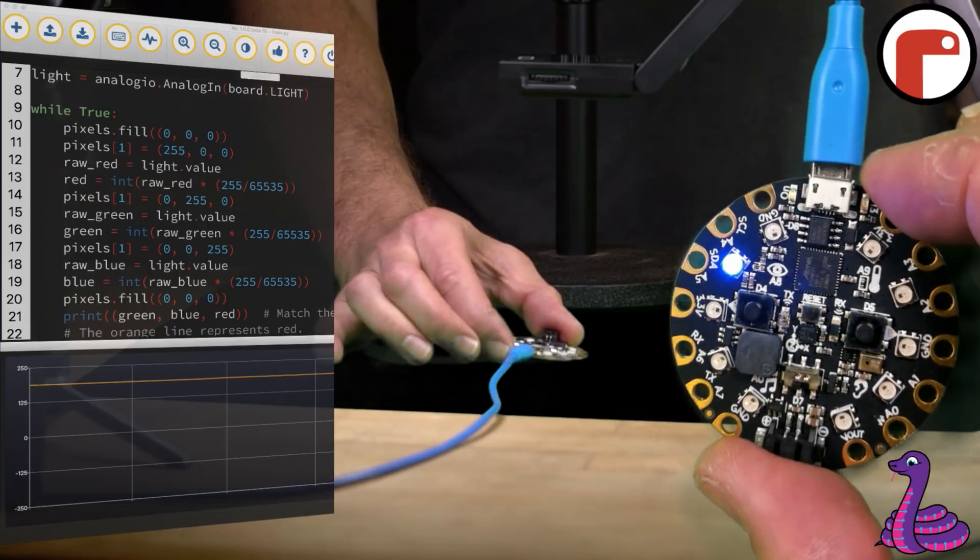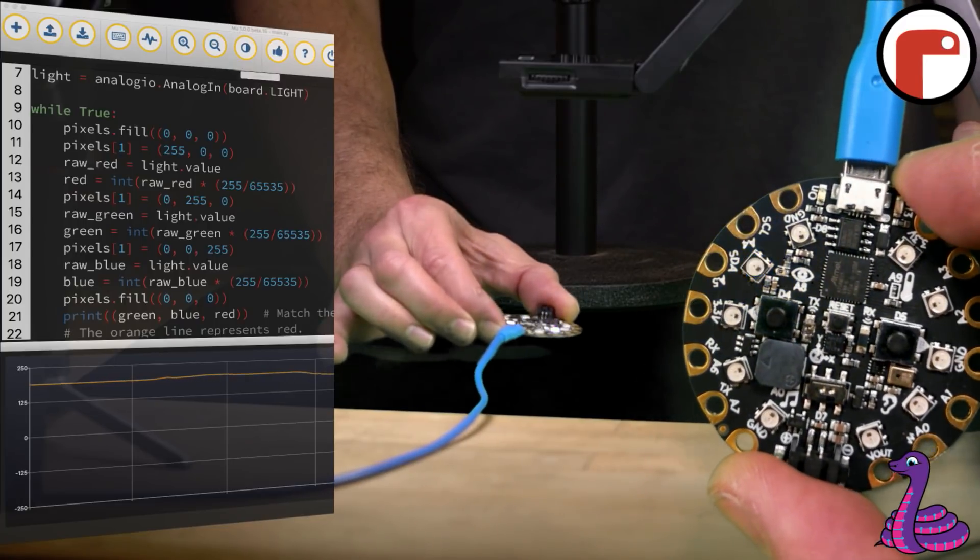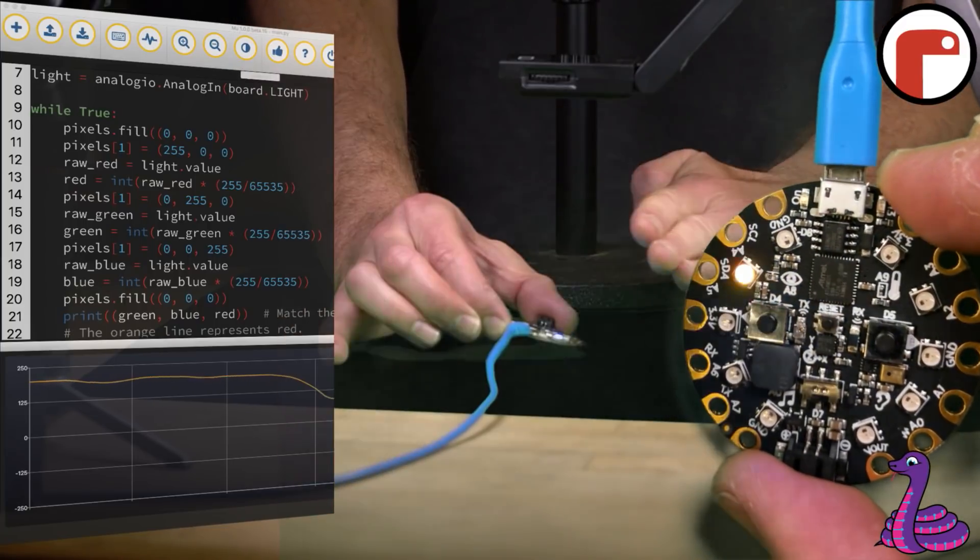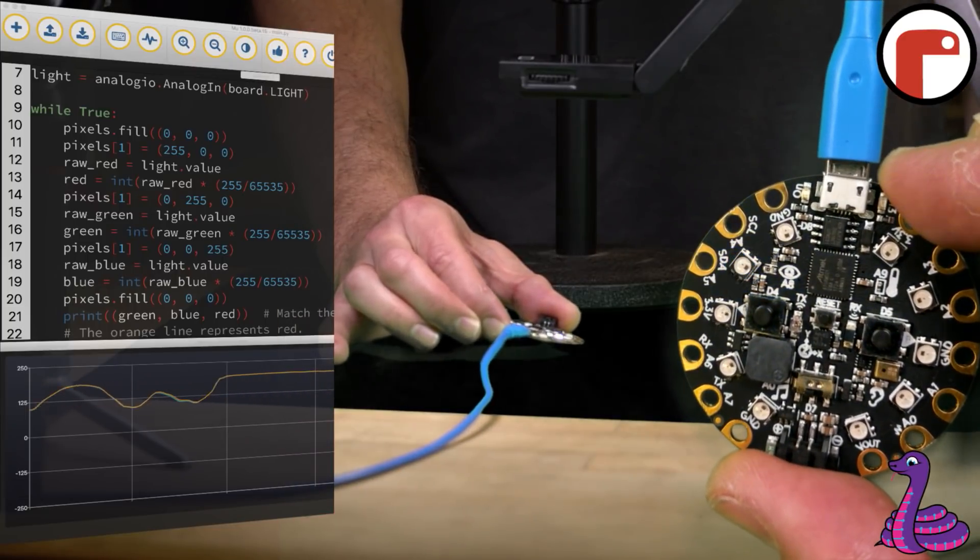So, our light sensor can tell the color of an object just by noting the varied brightness levels as red, green, and blue light flashes are reflected off of an object.